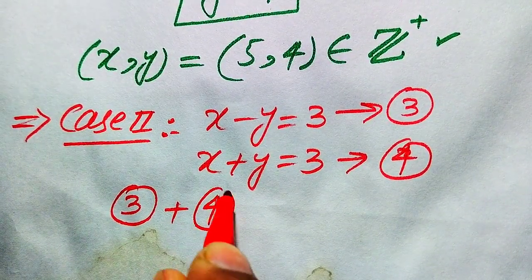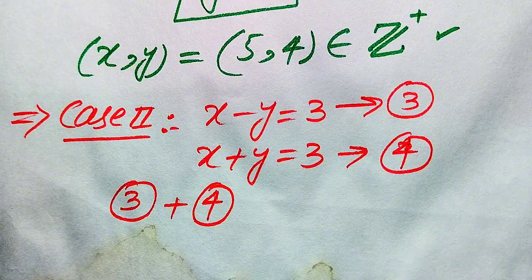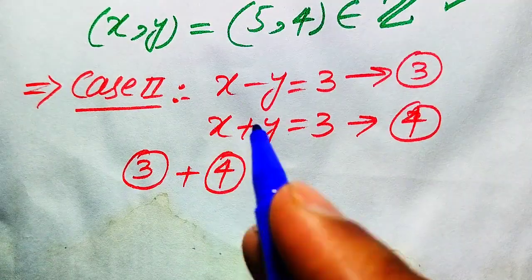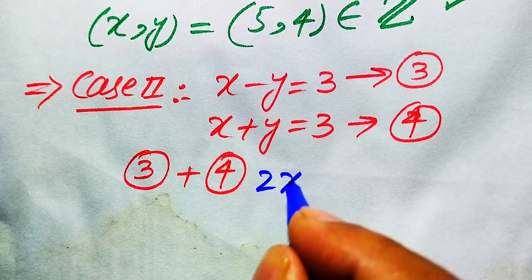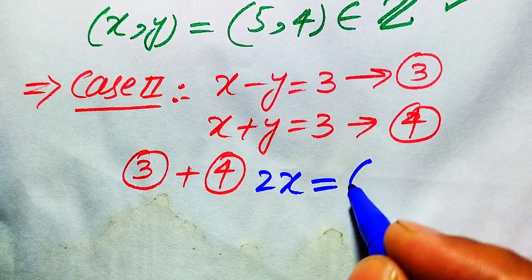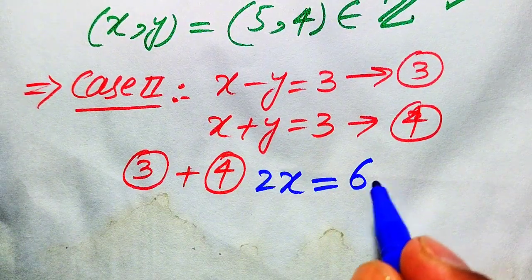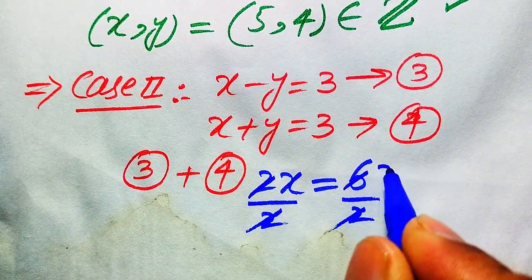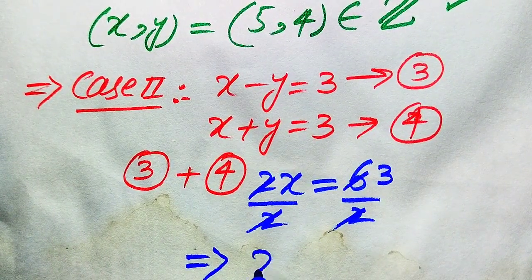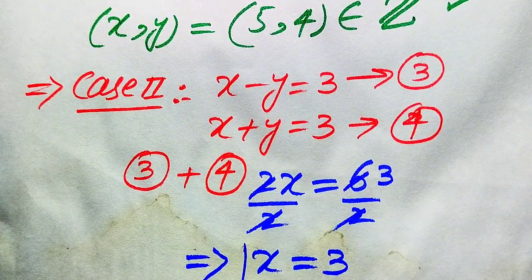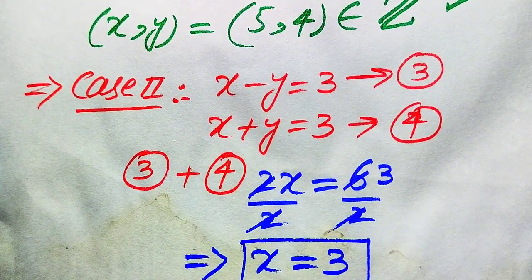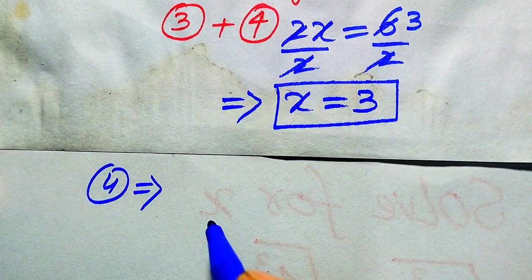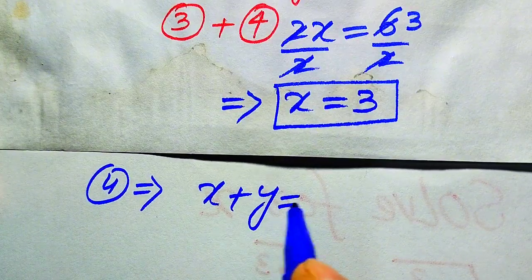Adding equation 3 and equation 4, the y terms cancel and we get 2x equals 6. Dividing both sides by 2, we get x equals 3.